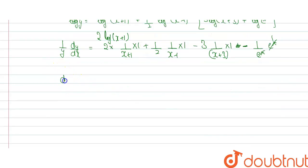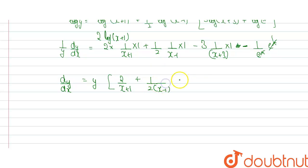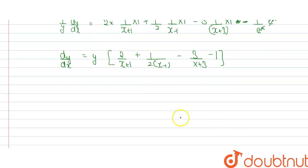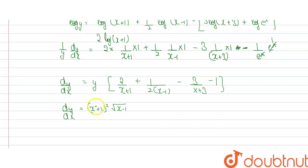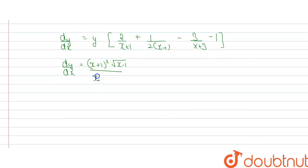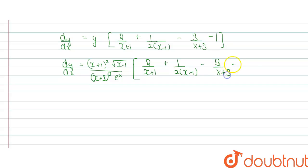On further solving we get dy by dx is equal to y into 2 divided by x plus 1, plus 1 by 2 into x minus 1, minus 3 divided by x plus 3, minus 1. The value of y is given as x plus 1 whole square into root x minus 1 divided by x plus 3 to the power cube into e to the power x, into the bracket 2 divided by x plus 1 plus 1 by 2 into x minus 1 minus 3 divided by x plus 3 minus 1.